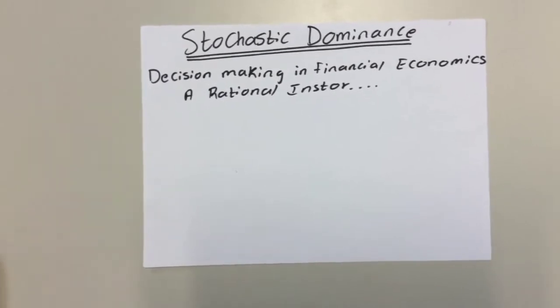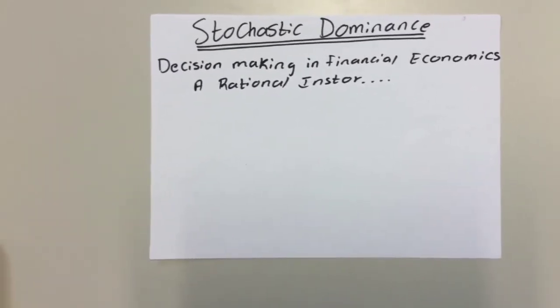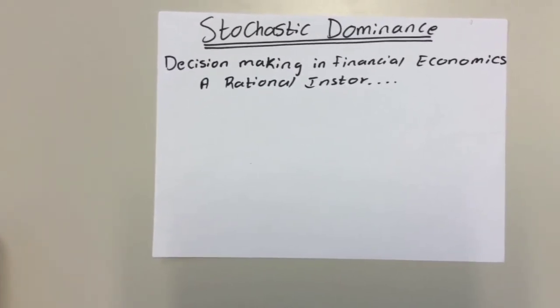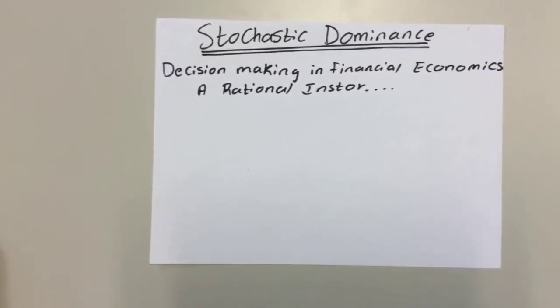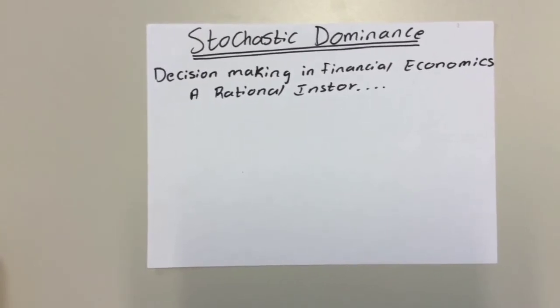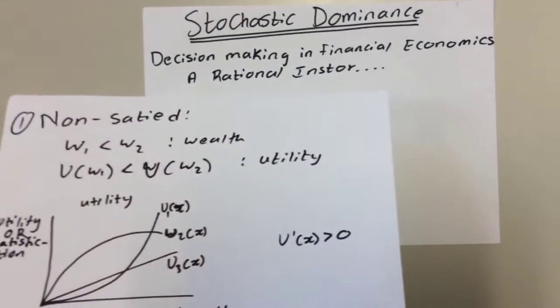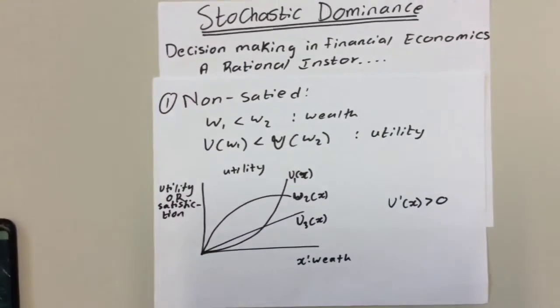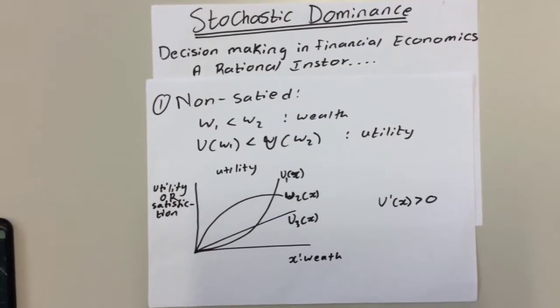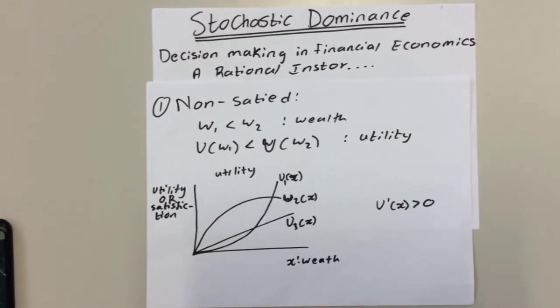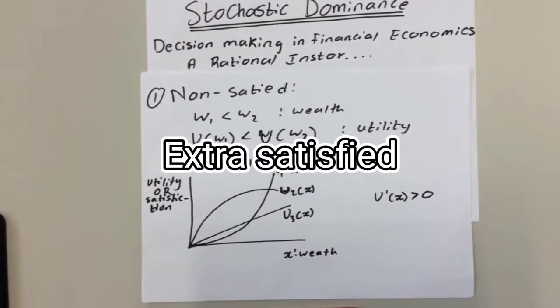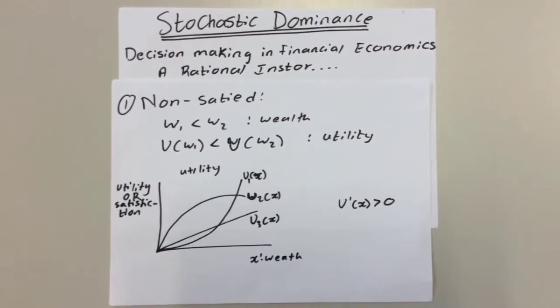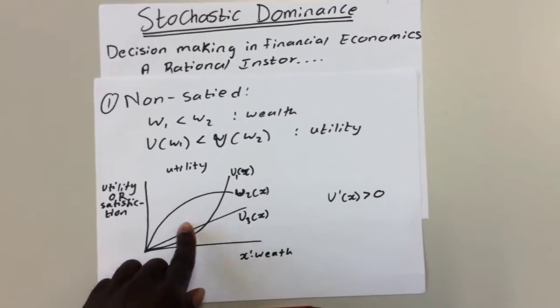First, we have to think about the process of decision-making in financial economics. What do we assume about a rational investor? We assume first that a rational investor is not satiated, meaning that they prefer more to less. That is to say that every increment of wealth makes them a little bit more happy. As you can see, the utility function which measures satisfaction always has to increase.